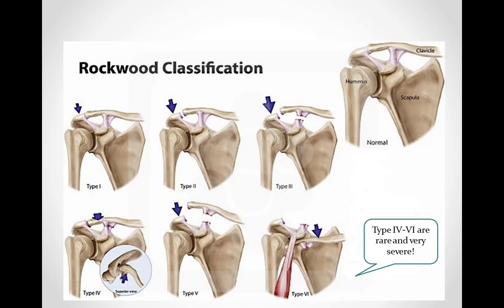Acromioclavicular joint injuries are classified most commonly using the 6-grade system described by Rockwood in 1998. This classification system evaluates not only the acromioclavicular joint itself, but also the coracoclavicular ligament, the deltoid, and the trapezius muscle, as well as the direction of dislocation of the clavicle with respect to the acromion. Within this system, types 1 through 3 are fairly unique, and types 4, 5, and 6 are variants of type 3.